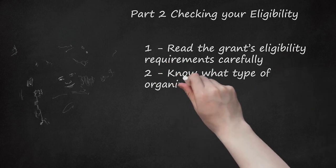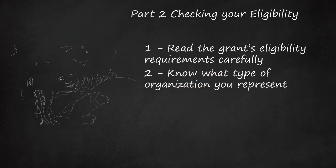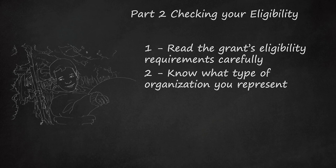Step 2: Know what type of organization you represent. Government grants are often designed to be awarded to specific types of organizations. If you or your group do not fit the eligibility, then completing the application is pointless. Some of the primary types of organizations that apply for grants are: Government organizations, which may include state, county, city, or special district government groups, and in some cases Native American tribal governing bodies. Education organizations, which may be public school districts, private schools, independent or charter schools, or private colleges or universities.